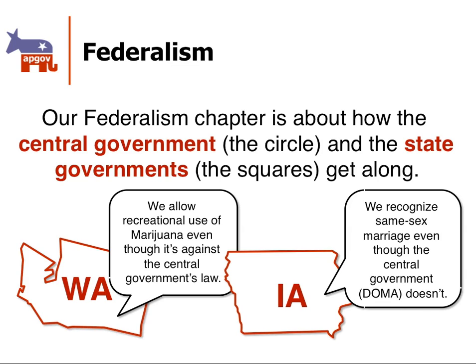Another example: in Iowa, they've decided to allow same-sex marriage, but the federal government doesn't recognize same-sex marriage. You'll see some conflict over this issue between the circles and the squares. Actually, in the summer of 2013, we'll get some Supreme Court rulings that will further evolve this issue and maybe let us know whether or not all states can have same-sex marriage, or whether the federal government has any business saying that there can't be same-sex marriage.